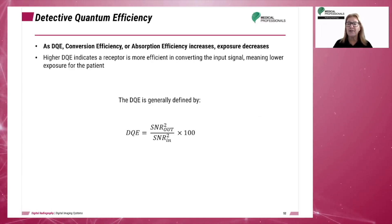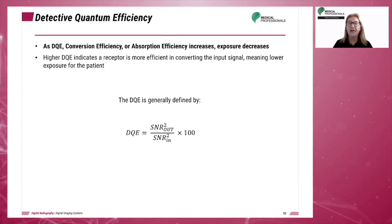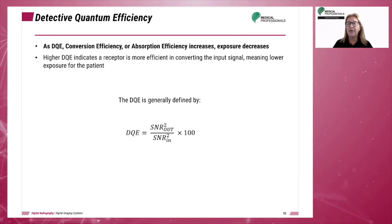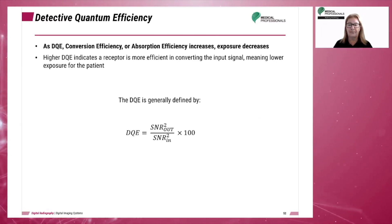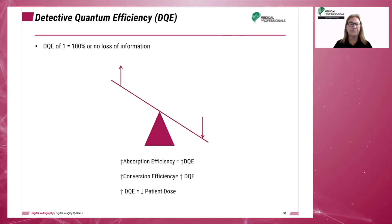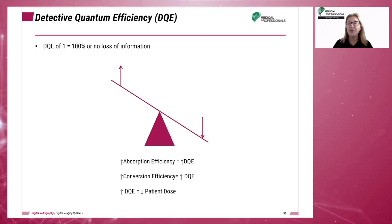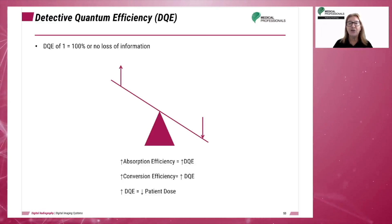High spatial frequency represents a larger number of viewable objects in an image. The higher the DQE indicates a receptor is more efficient in converting the input signal, and therefore allows for lower exposure. The goal is to choose an imaging receptor with highest absorption efficiency, greatest conversion efficiency, and the highest DQE, to achieve the lowest patient dose.